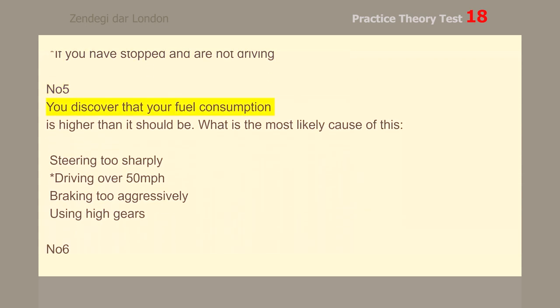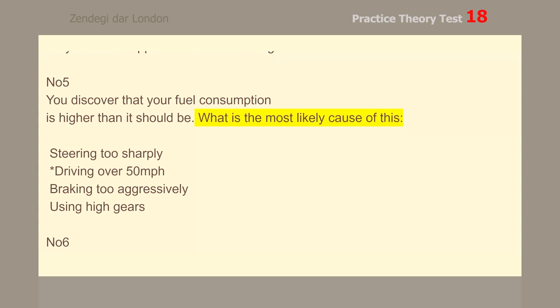Number 5. You discover that your fuel consumption is higher than it should be. What is the most likely cause? Driving over 50 miles per hour.